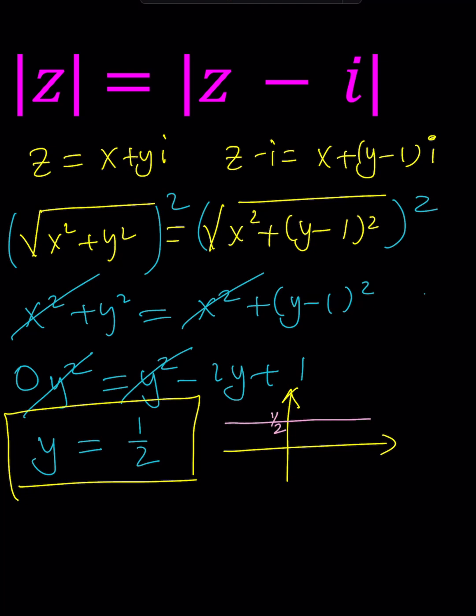Alright? Because basically the numbers we're looking for is going to look like Z equals X plus 1 half I.